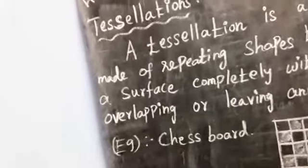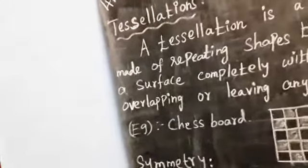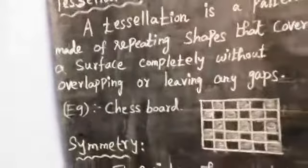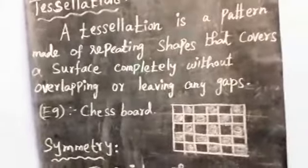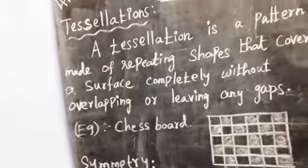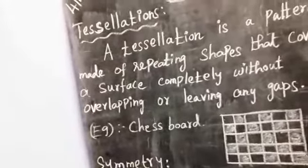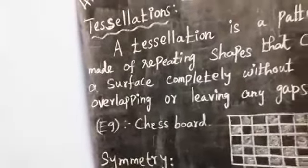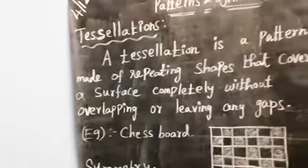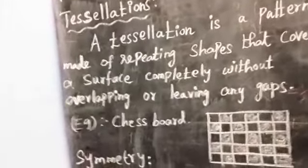Important points to remember about tessellation: the tiles must flow without leaving any gaps, the tiles must be the same size and same shape, and each vertex must look the same. That is called tessellation — without leaving any gaps or any overlaps.